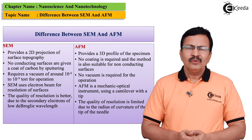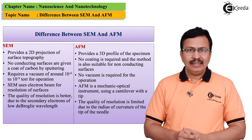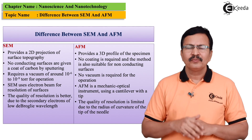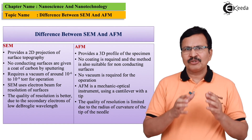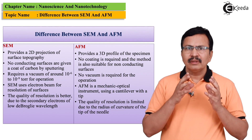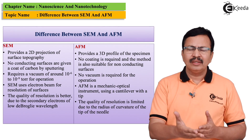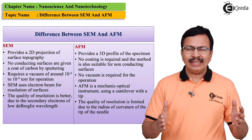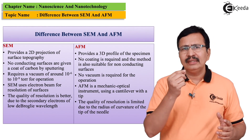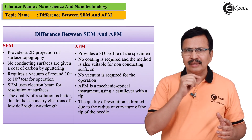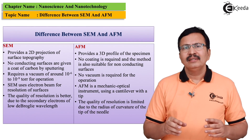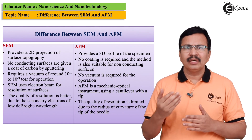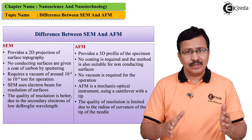One of the biggest advantages of SEM is that it has better resolution — better in the sense that it is actually collecting the secondary electrons that are being liberated by the surface. Correspondingly, for AFM the resolution is limited by the tip of the cantilever. Hence, SEM scores better compared to AFM as far as resolution is concerned.